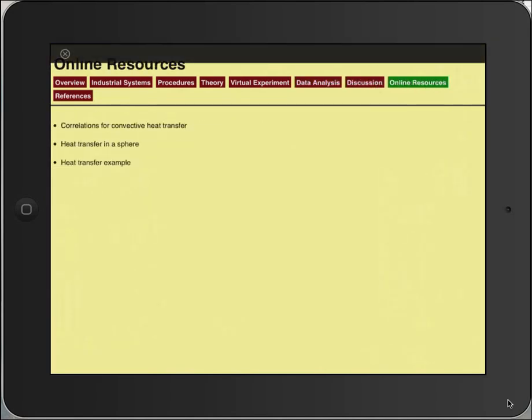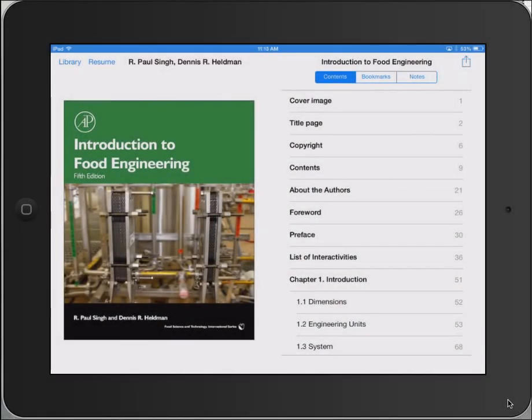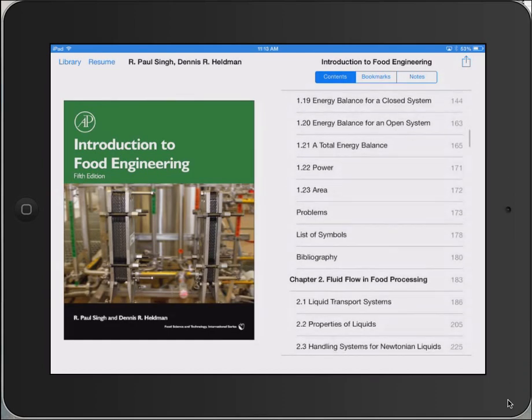There are details provided on how to process data to obtain the relevant coefficients. There are also discussion questions. With over 200 multimedia embellishments, this version of the 5th edition is intended to help increase learning of various principles and concepts of food engineering.